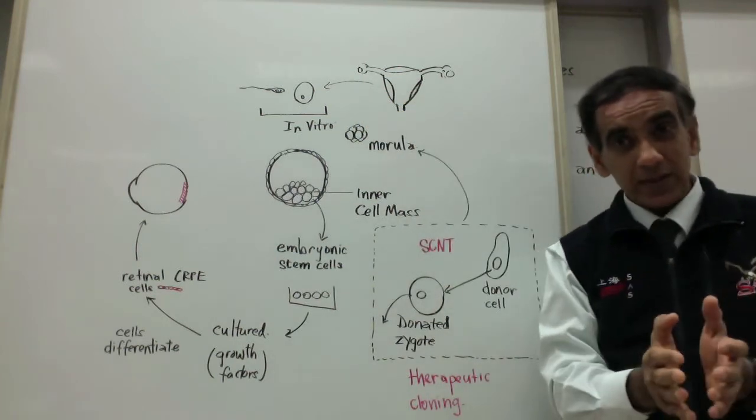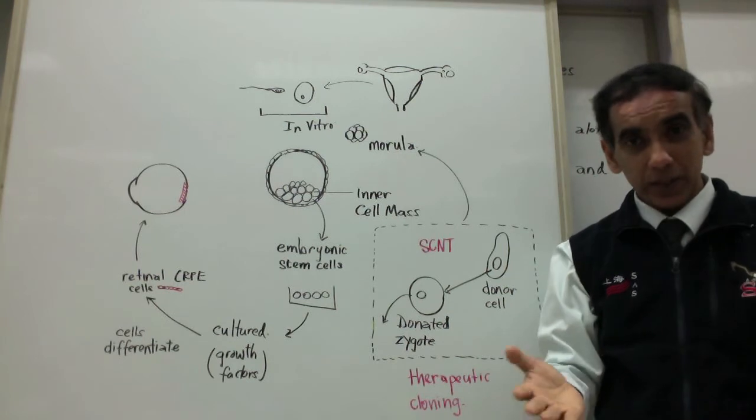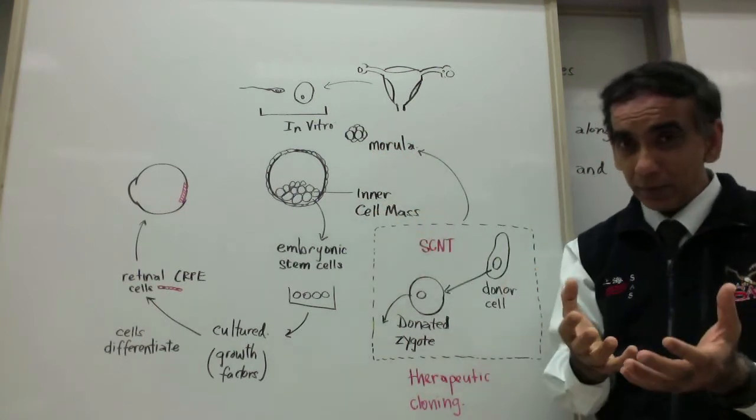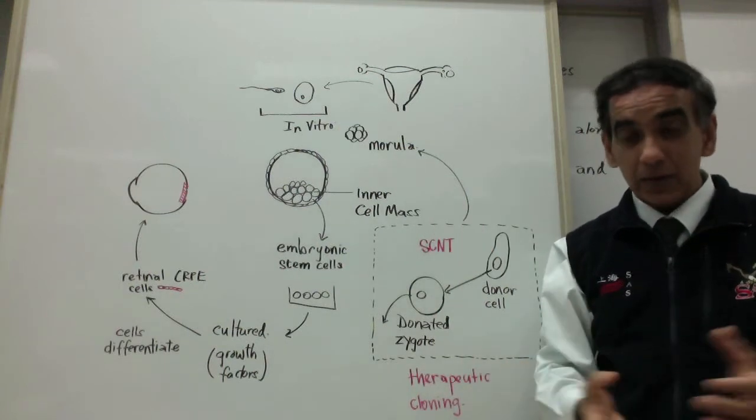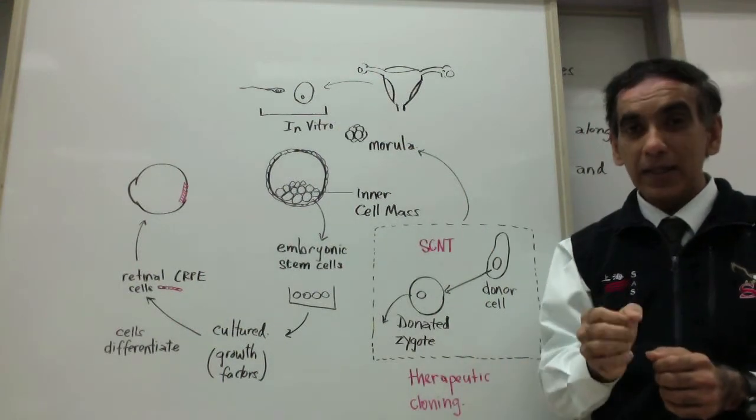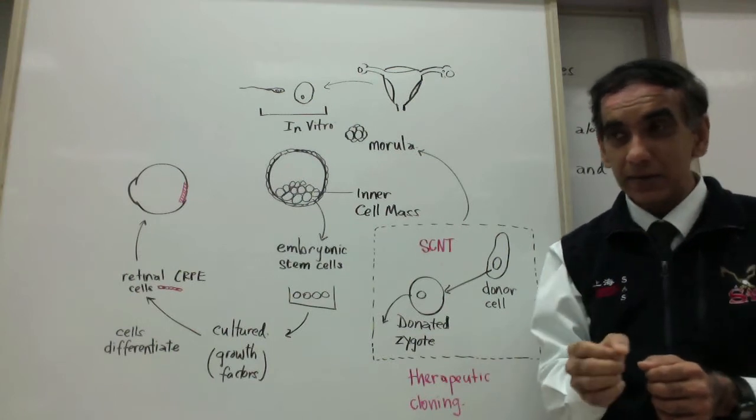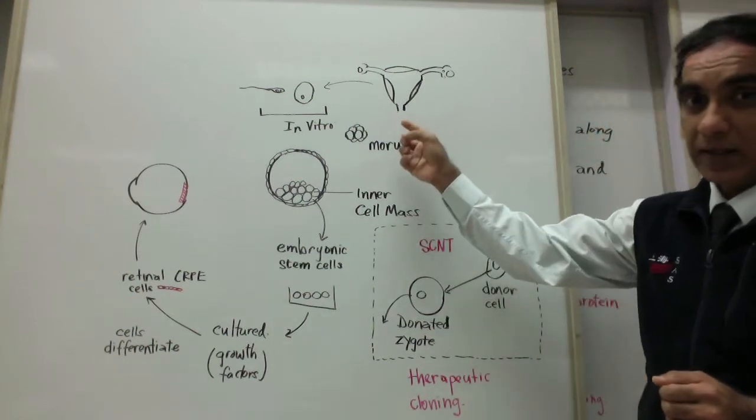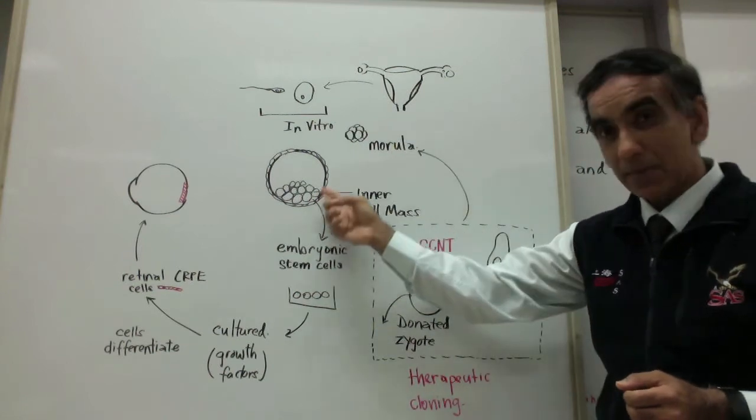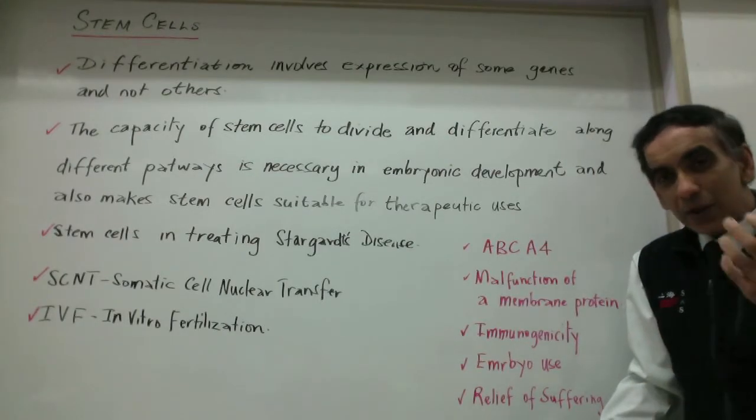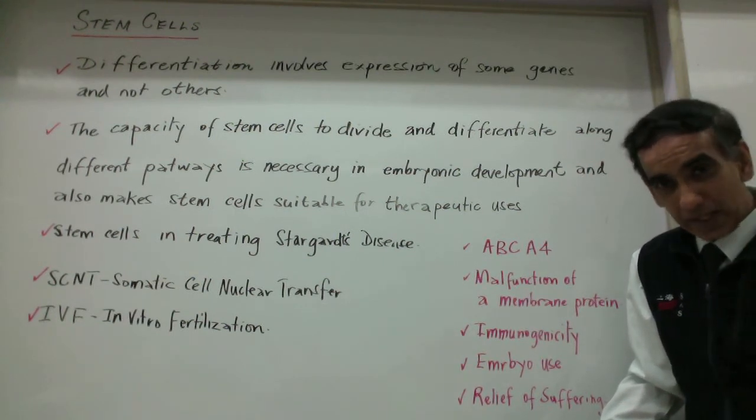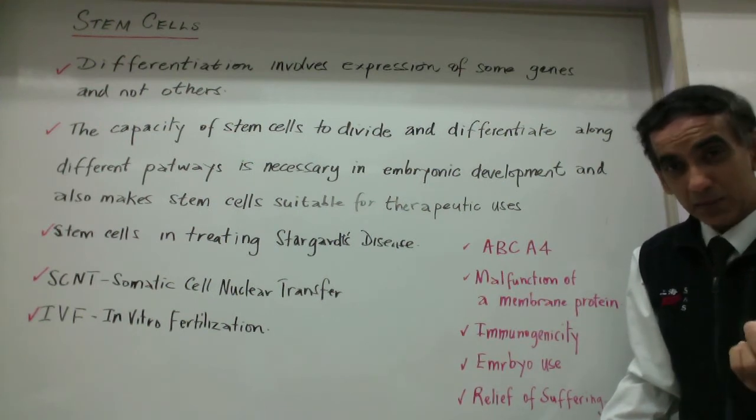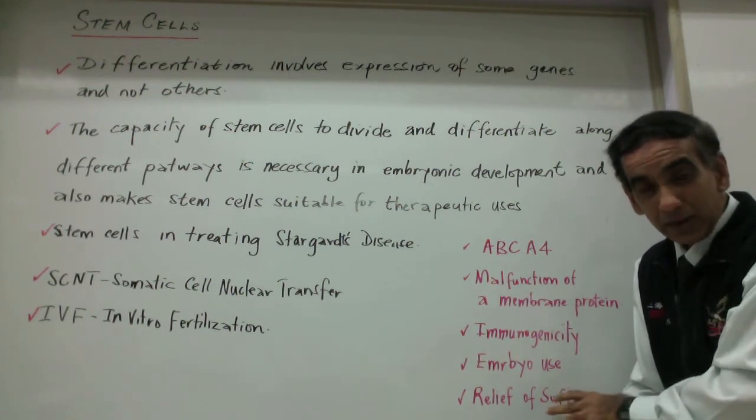And what this does is it creates leftover embryos, possible human life forms, which are left in petri dishes in the lab, frozen or disposed of. But when research began into human embryonic stem cells, this provided a great source of embryonic stem cells. Yet the use remained controversial, for the status of this early embryo remained questionable, and the question was asked whether or not one life was being taken to bring relief of suffering to another.